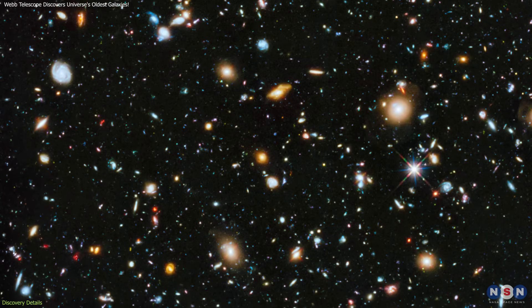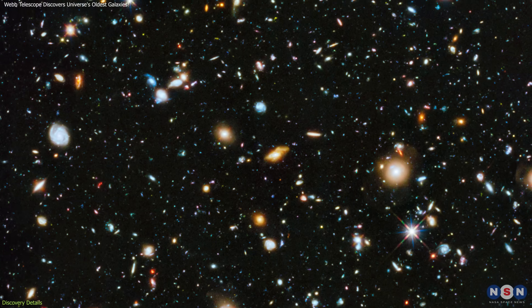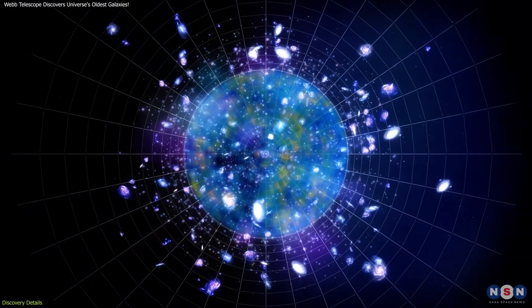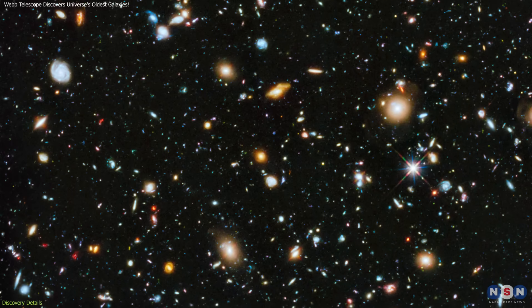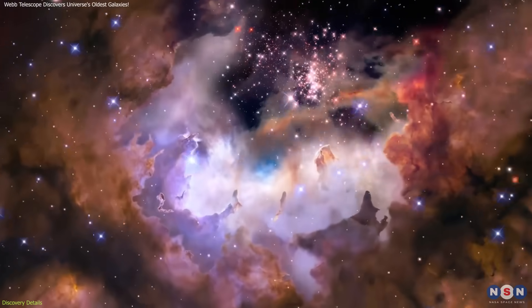The Ultra Deep Field is a small patch of sky that contains nearly 100,000 galaxies, each caught at different moments in their history, potentially billions of years in the past. By focusing on this region, James Webb was able to peer deeper into the universe's history than ever before.